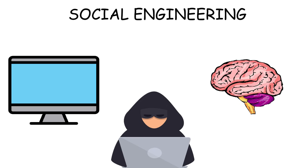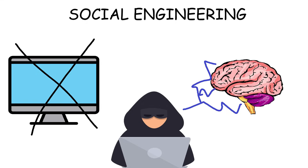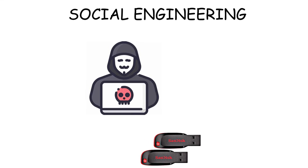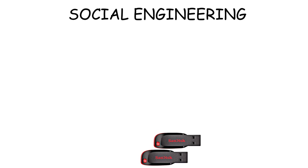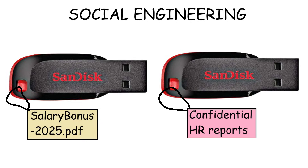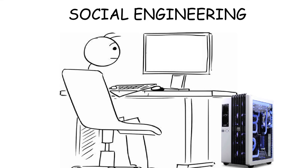Social engineering. Social engineering is a manipulation tactic where the hacker exploits human psychology instead of a technical vulnerability. For example, a hacker may drop a few USB drives in a company parking lot. An employee finds one and sees tags that say 'Salary Bonus 2025' or 'Confidential HR Reports.' Out of curiosity, he plugs it into his work computer.